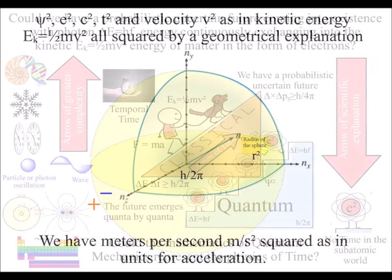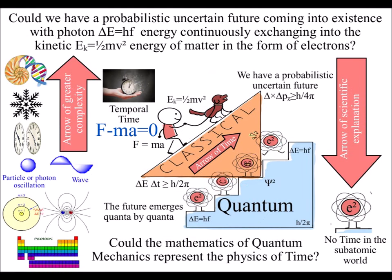In this theory, we have a probabilistic uncertain future, continuously coming into existence, with photon energy exchanging potential energy into the kinetic energy of electrons.